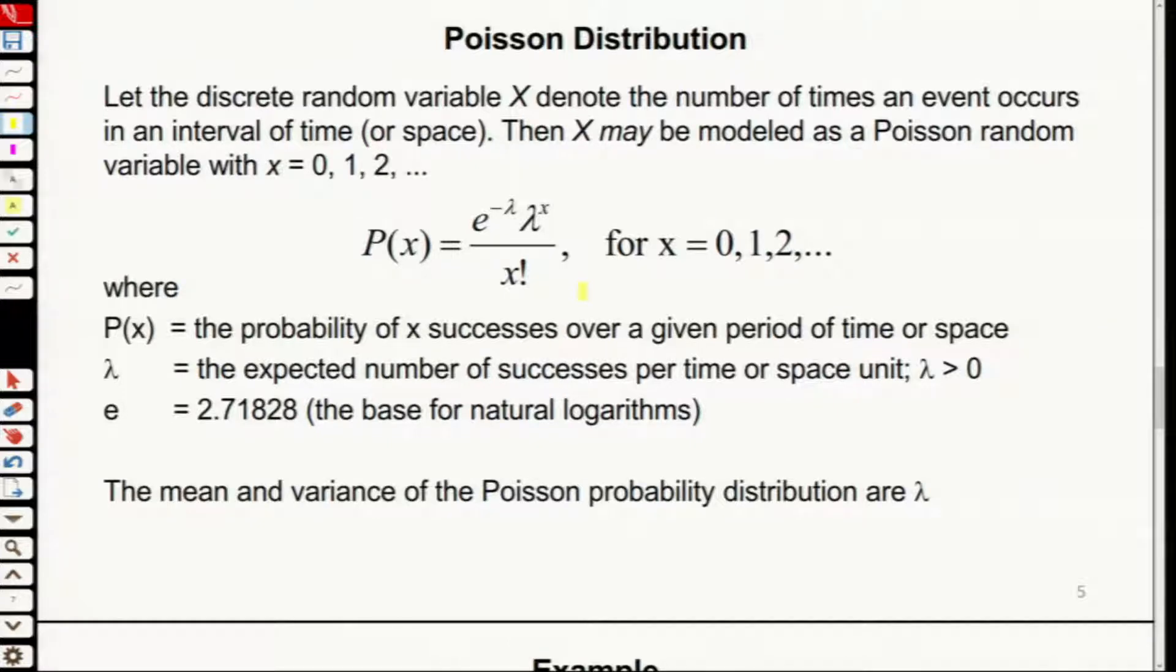The probability of X equals exponential minus lambda, lambda to the X, over X factorial for X equals 0, 1, 2. What is the probability X?